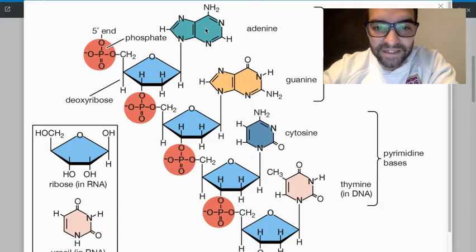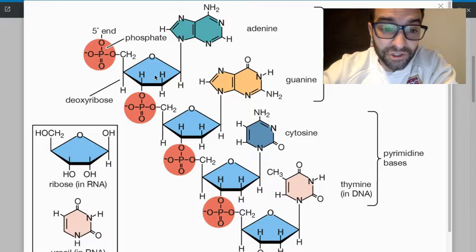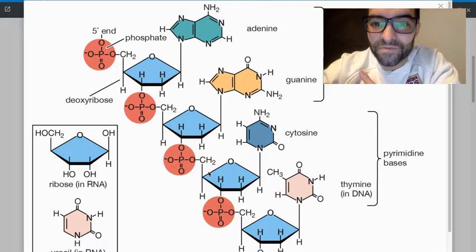Looking at this, we have four nitrogenous bases. This is really, because this is the only difference between these DNA molecules, these genes if you will, is the nitrogenous base. That's how we talk about it. Because the phosphate and the sugar, the deoxyribose, they really just repeat.